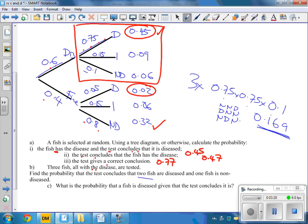Last one then. Find the probability that a fish is diseased, given that it concluded it was. This sort of really goes back to what we were doing earlier. We know it's diseased at 0.45. But not all the ones that had that answer. Actually, we sometimes had these saying it as well. So it's 0.45 out of 0.47.